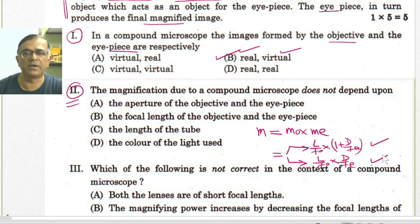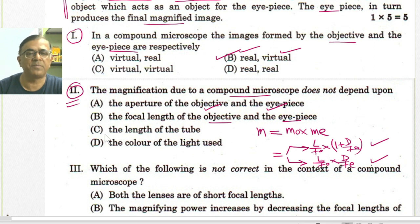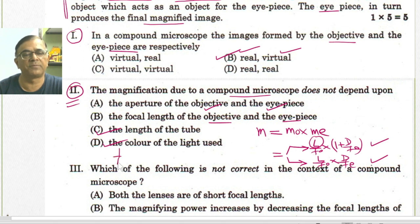It is obvious from these two formulas that the magnification of the compound microscope neither depends upon the aperture of the objective lens nor on the aperture of the eyepiece. It does depend upon the focal lengths FO and FE, as visible in the formula. It also depends upon the tube length L. Additionally, it depends upon the color of light used, because different colors give different refractive indices for the lens material, and hence different focal lengths, as seen from the lens maker's formula. The final answer is A.